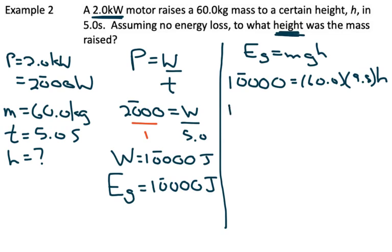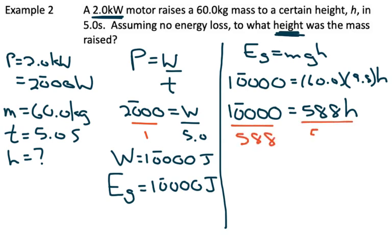Dealing with the right side of the equation, we can multiply the 60 and the 9.8. That gives us 588h. Solving for h, we'll divide both sides by 588. Taking this to two sig figs would give us that the height of the object is 17 meters.